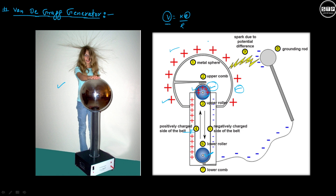If you keep increasing the charge accumulated on the surface, the electric field due to the sphere — which is kq divided by r squared — will also increase. So if you increase q, the electric field will increase.